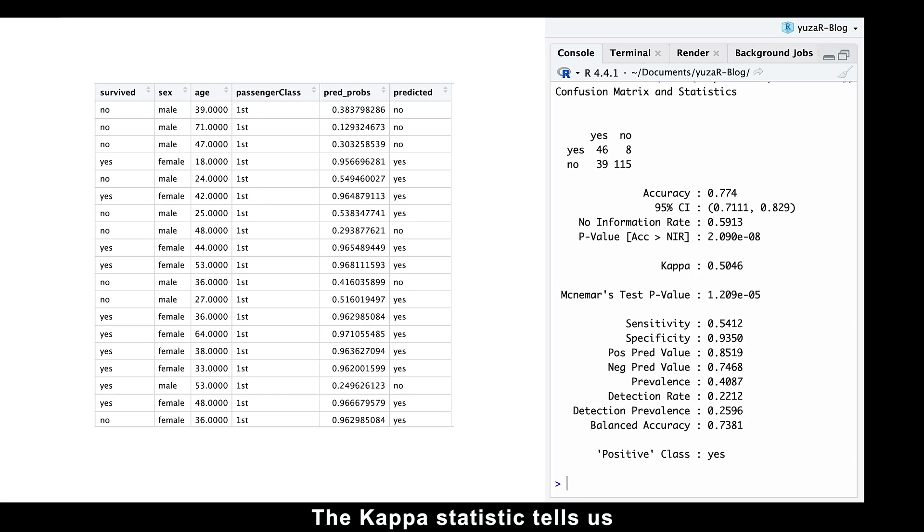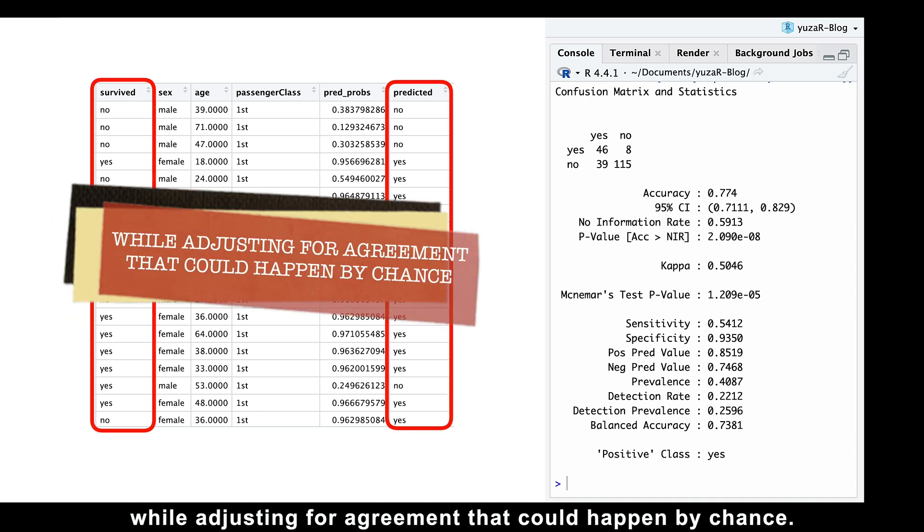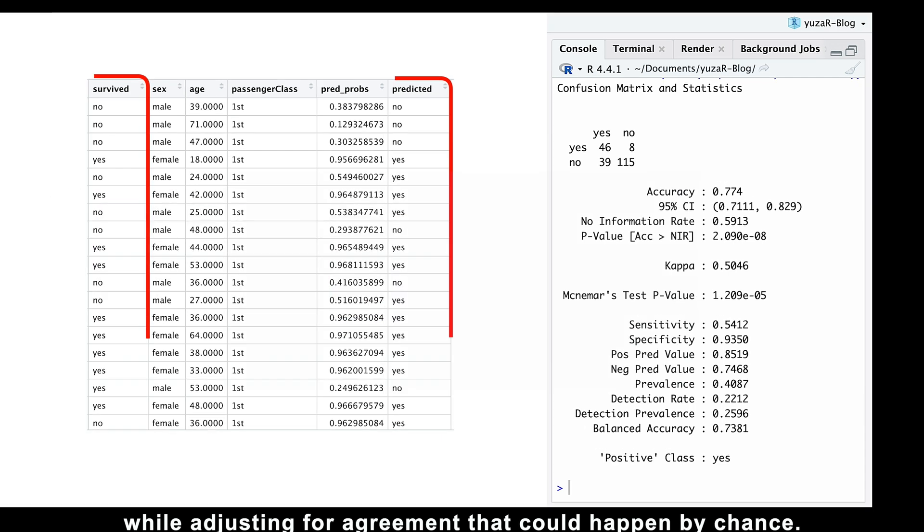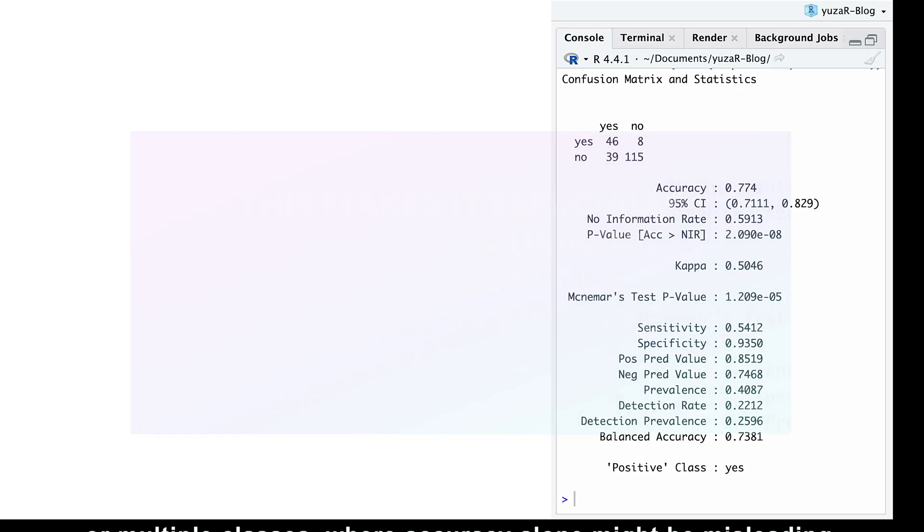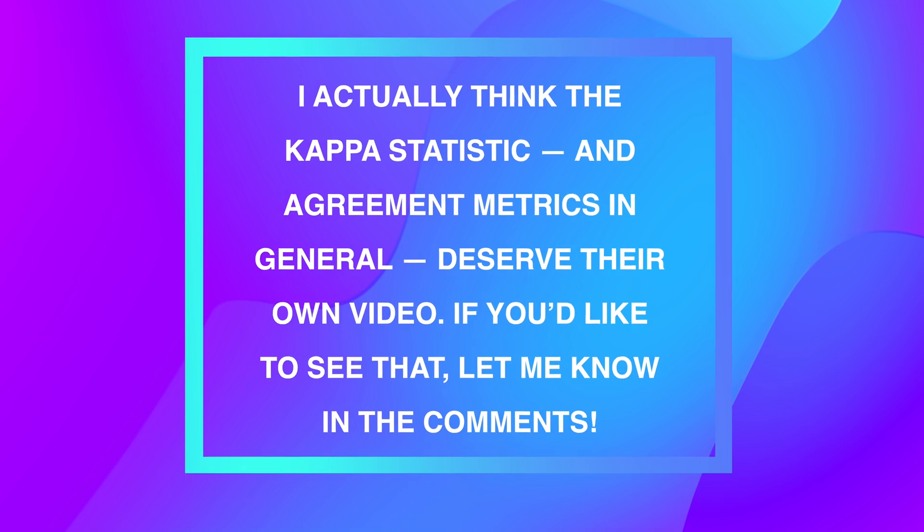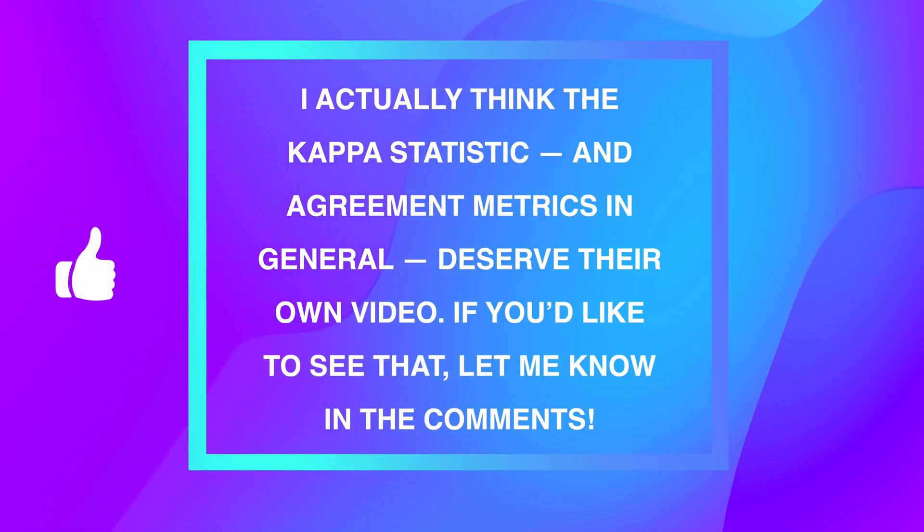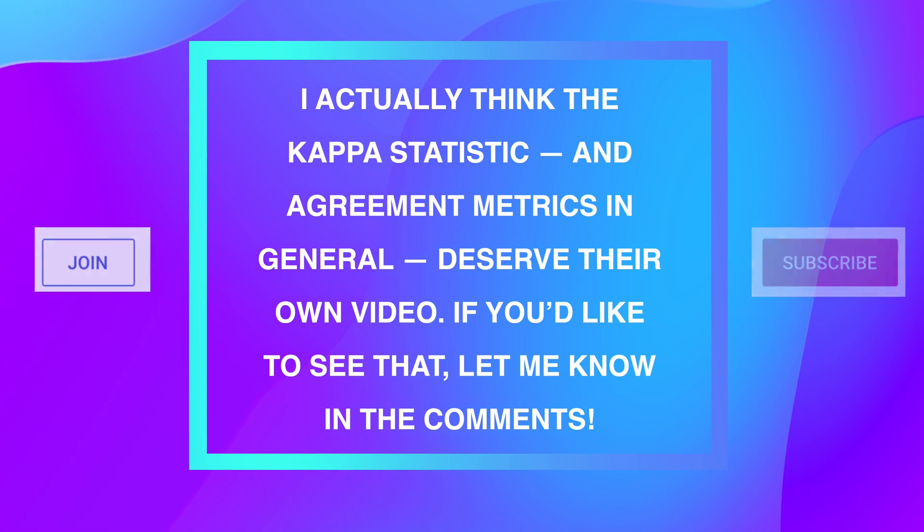The Kappa statistic tells us how well the observed and predicted classifications match, while adjusting for agreement that could happen by chance. This makes it especially useful when dealing with imbalanced datasets or multiple classes, where accuracy alone might be misleading. I actually think the Kappa statistics and agreement metrics in general deserve their own video. If you'd like to see that, let me know in the comments. For now, let's focus on interpreting Kappa.